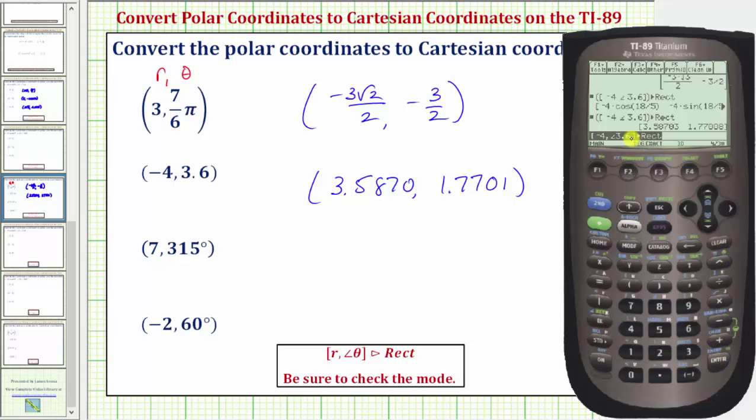Let's go through this process again. We'll enter open square bracket by pressing second comma. R is seven comma. Theta is three hundred fifteen degrees. Again we need the angle symbol, so catalog. The cursor is already on the angle symbol, so enter. Three hundred fifteen. Close square bracket, so second divide.